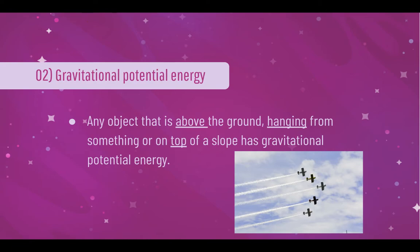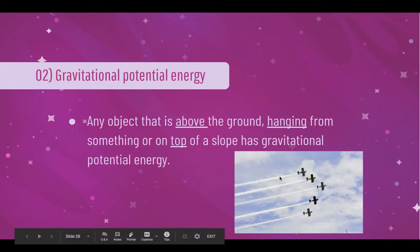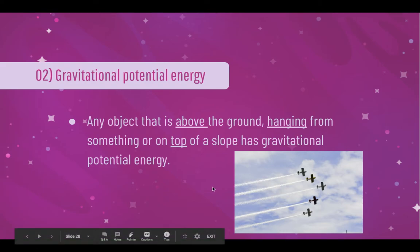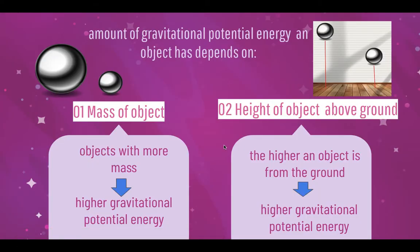The next potential energy we will be looking at is gravitational potential energy. Any object that is above the ground, hanging from something, or on top of a slope has gravitational potential energy. For example, a plane taking off from the ground has gravitational potential energy as it is at a height above the ground. The amount of gravitational potential energy depends on the mass of the object and the height of the object above the ground.